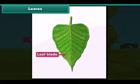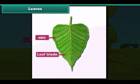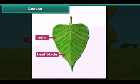The flat part of a leaf is called the leaf blade. Each leaf on its leaf blade has a main vein and many small veins connected to it. Through these veins, water is circulated throughout the leaf.